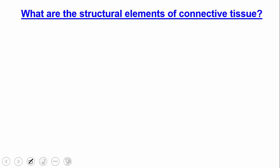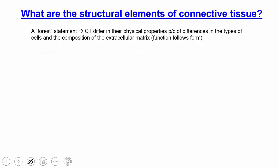What are the structural elements of connective tissue? Connective tissues differ from each other in their physical properties because of differences in the types of cells and the extracellular matrix they have. Function follows form — if you change the structures that are there, it changes the function that tissue can perform.